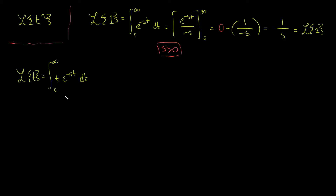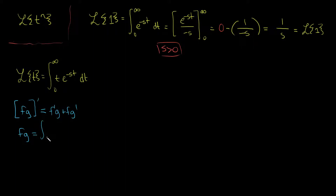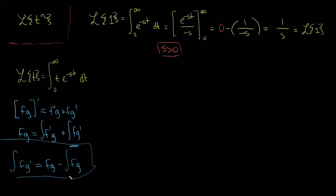Integration by parts is the inverse product rule. If f and g are two functions, you know the derivative of fg is f'g plus fg'. Take the integral of both sides: fg equals the integral of f'g plus the integral of fg'. Solving algebraically for the integral of fg', we get: the integral of fg' equals fg minus the integral of f'g. This is integration by parts, derived in about two seconds.